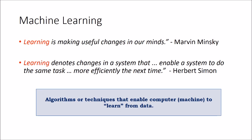So what are algorithms? Algorithms or techniques enable a computer — or you can say a machine — to learn from data. Machine learning is nothing but an algorithm or technique that enables a machine to learn from data.